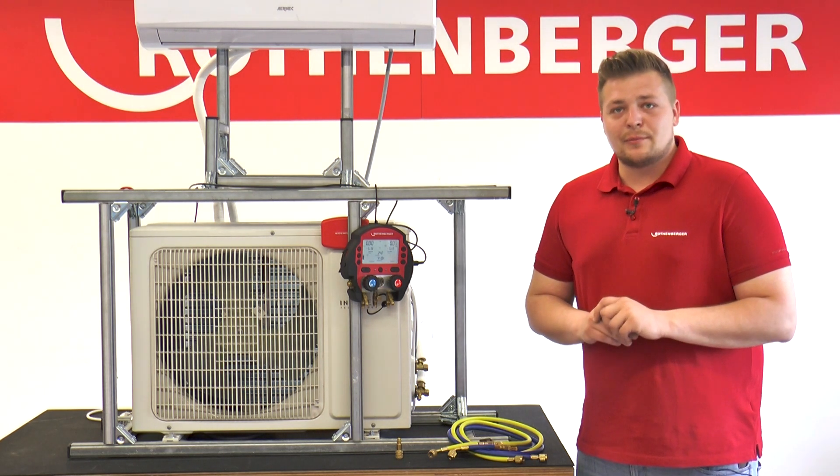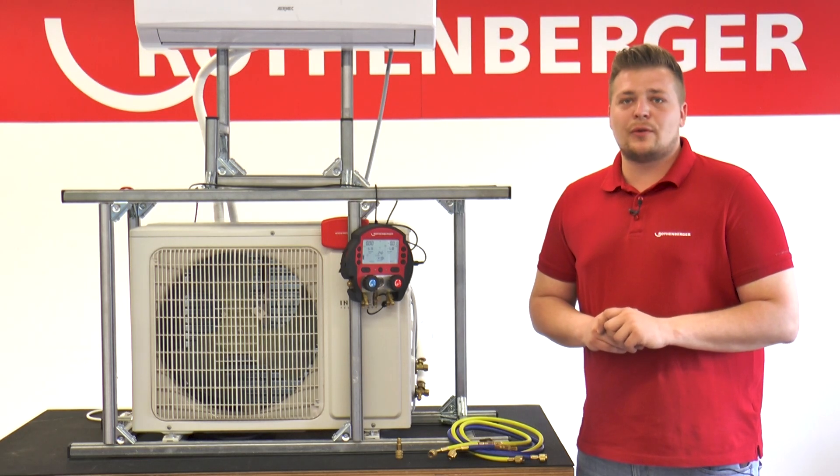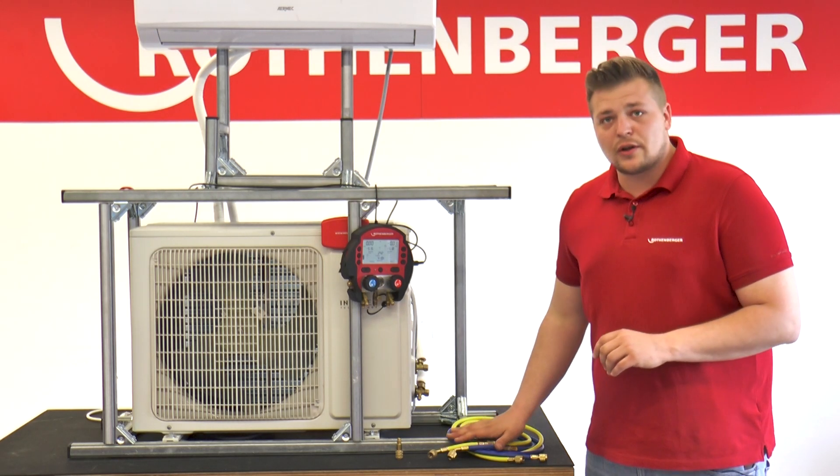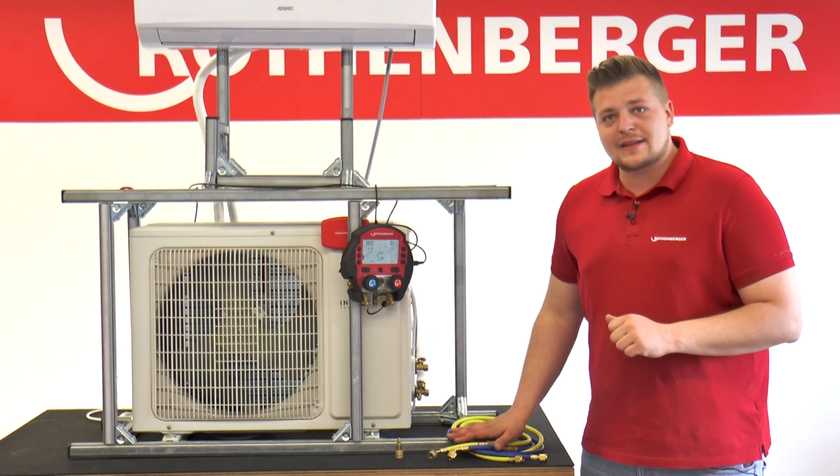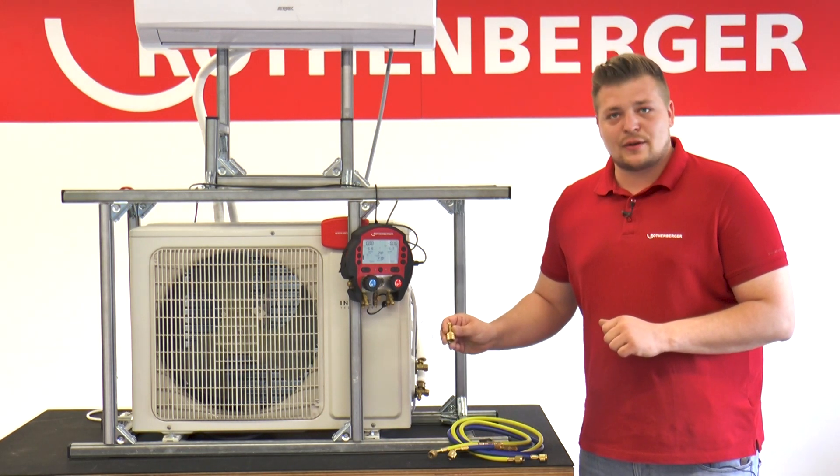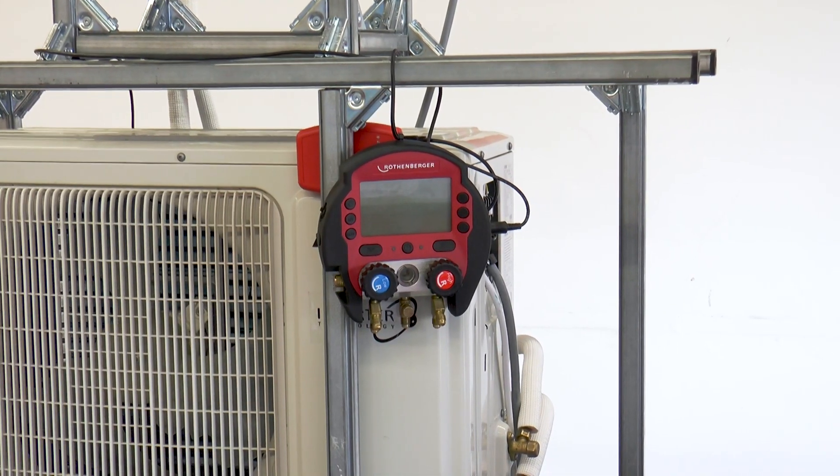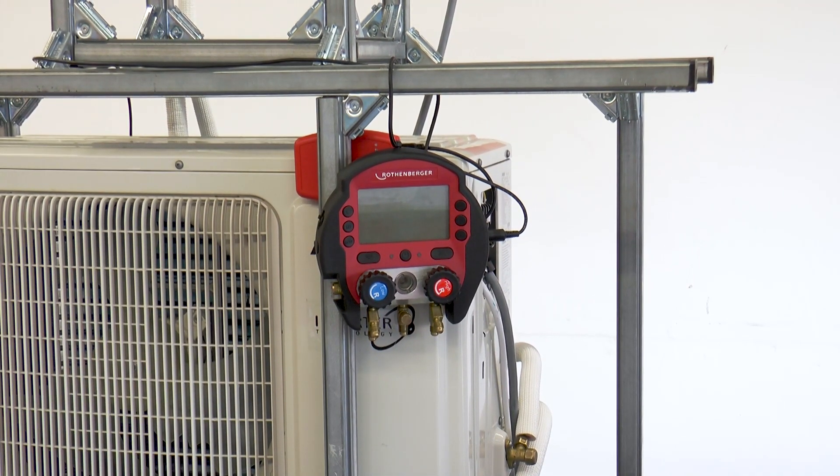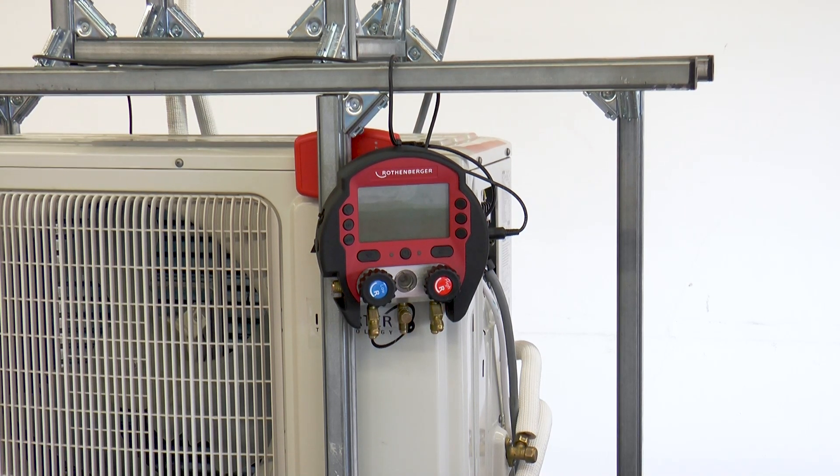In order to be able to connect the digital manifold properly, it is clear that we need refrigerant hoses and in this case we also need an adapter from ¼ inch SAE to 5-16 inch SAE. This tutorial shows how to professionally connect the Roll Cool 600 to a newly installed air conditioning unit.